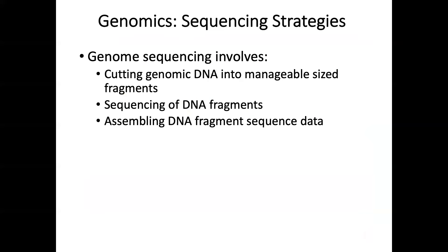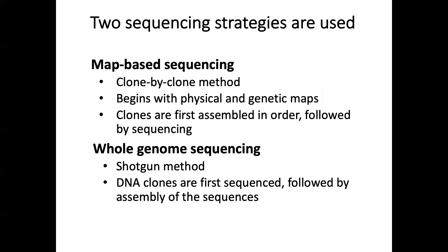The sequencing strategy included several steps. First, genomic DNA from donors was isolated and cut into manageable-sized fragments by restriction enzymes, which act like scissors. These DNA fragments were then sequenced individually. Once all sequencing data were obtained, software was used to assemble those sequences. Correctly assembling sequences from thousands or millions of fragments is a difficult task.